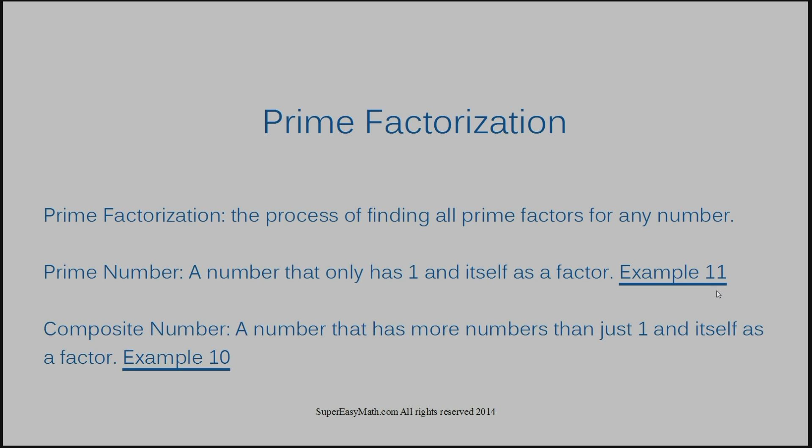A composite number is a number that has more numbers than just 1 and itself as a factor. For example, 10. With the number 10, I could multiply 1 times 10 to get 10, but I could also multiply 2 times 5 to get 10. So it has another set of factors besides just 1 and itself.